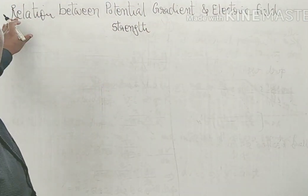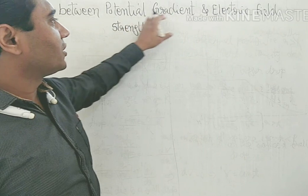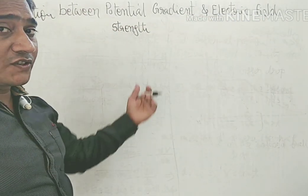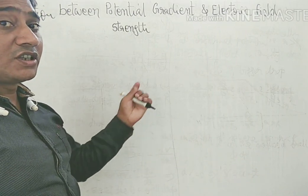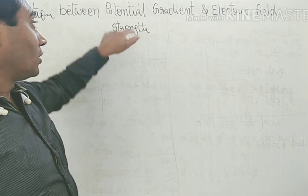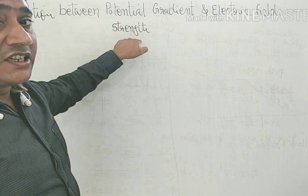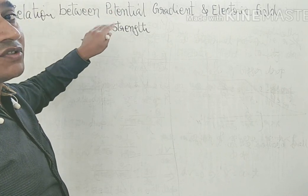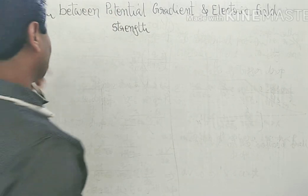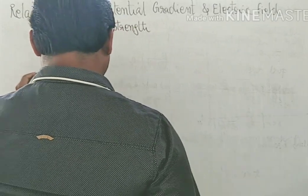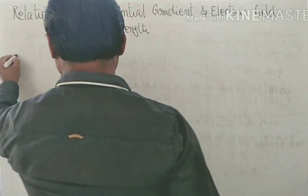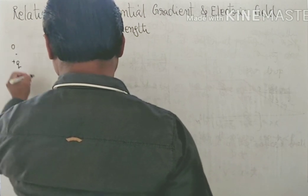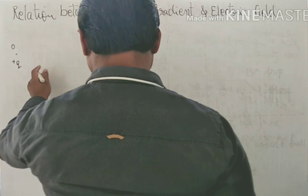Next topic: relation between potential gradient and electric field strength. Before the last topic we used the result that electric field strength is the negative of potential gradient. We must have the derivation of that. Suppose we have an isolated single charge plus q placed at point O.